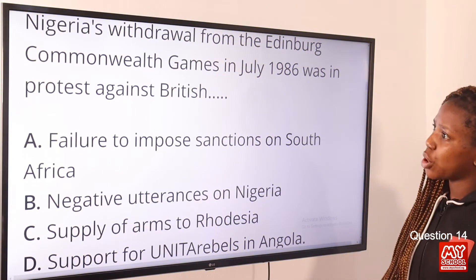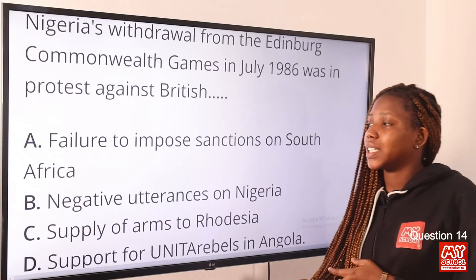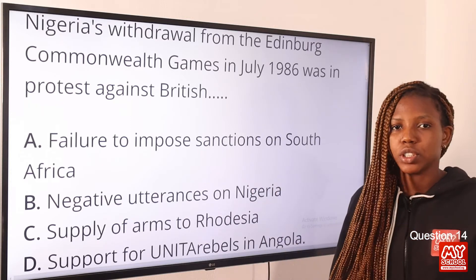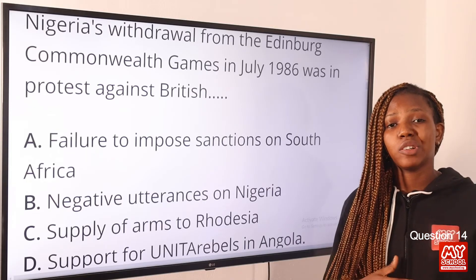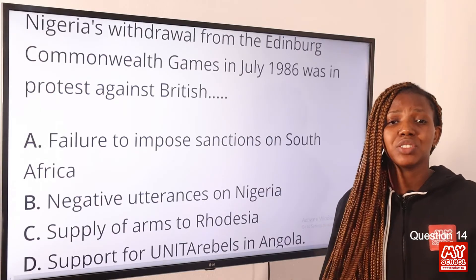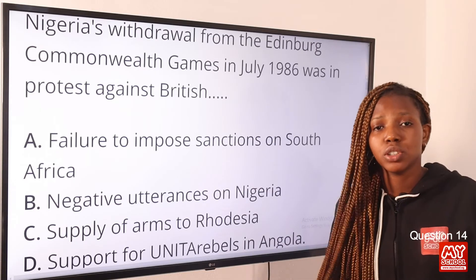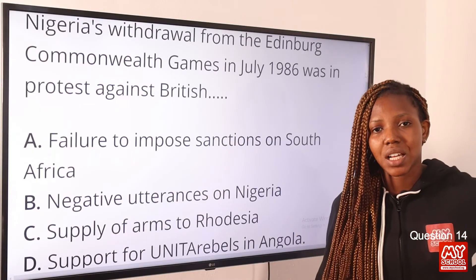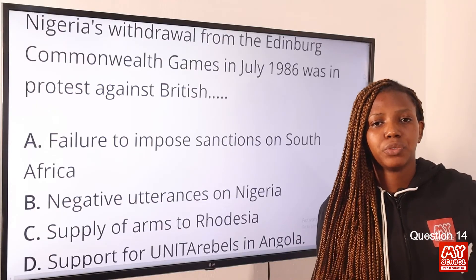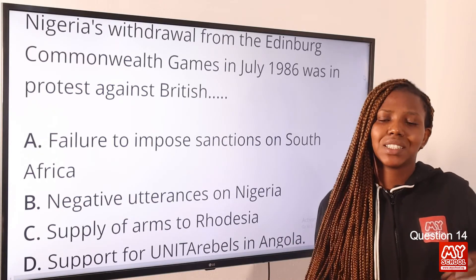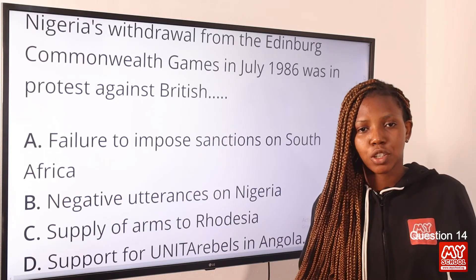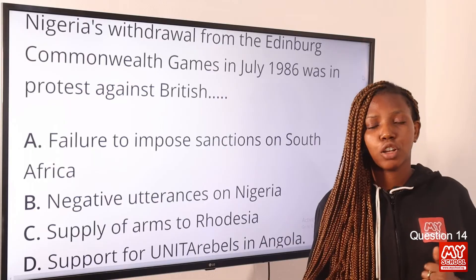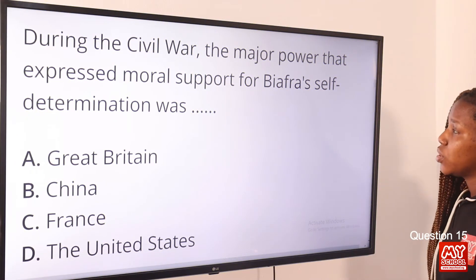Question fourteen: Nigeria's withdrawal from the Edinburgh Commonwealth Games in July 1986 was in protest against British — option A, failure to impose sanctions on South Africa. Nigeria withdrew because Britain refused to impose sanctions on South Africa for its apartheid policy. Nigeria felt the British were being hypocritical by inviting them to the Commonwealth Games while not acting against apartheid. Option A is correct.